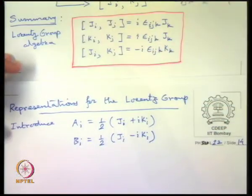So Herman Weyl suggested that what we should do is define A_i = (1/2)(J_i + i K_i), and B_i are of course with the opposite sign: B_i = (1/2)(J_i − i K_i). So there are two independent linear combinations introduced, and now let us see what we get with their commutation.